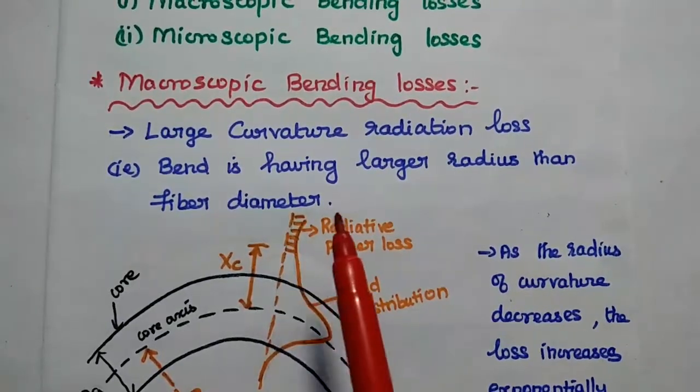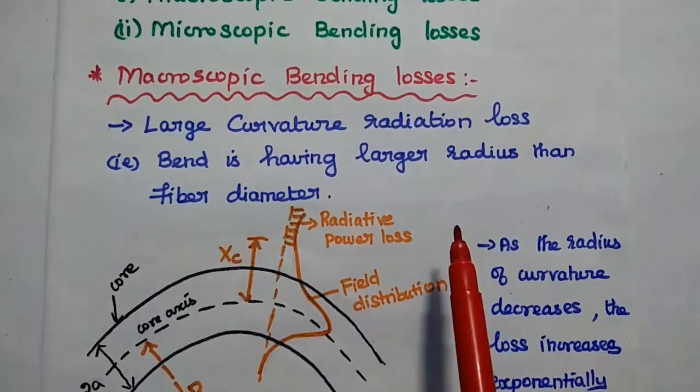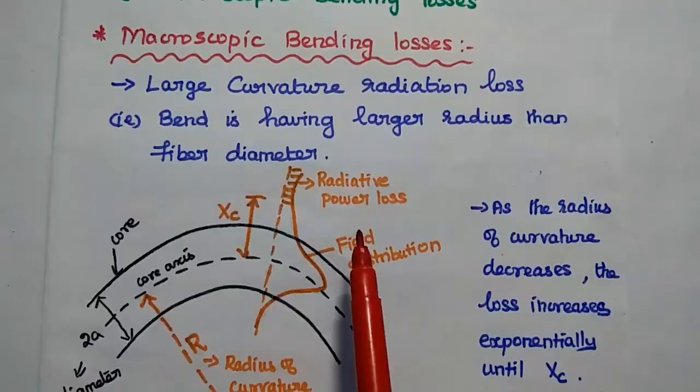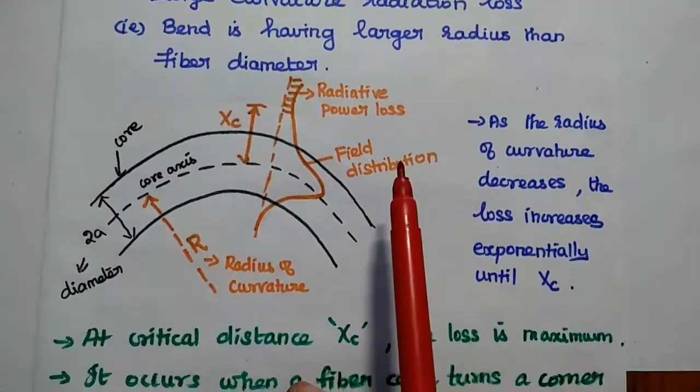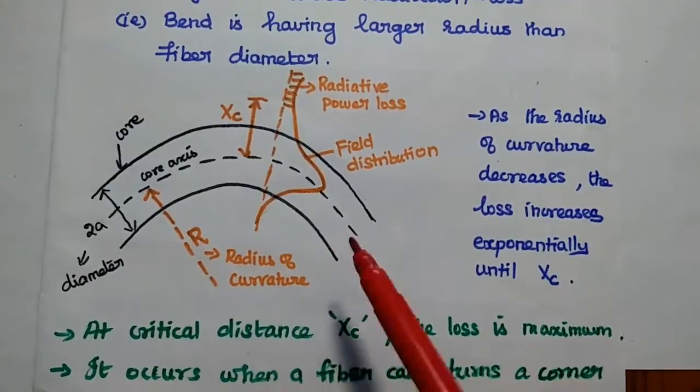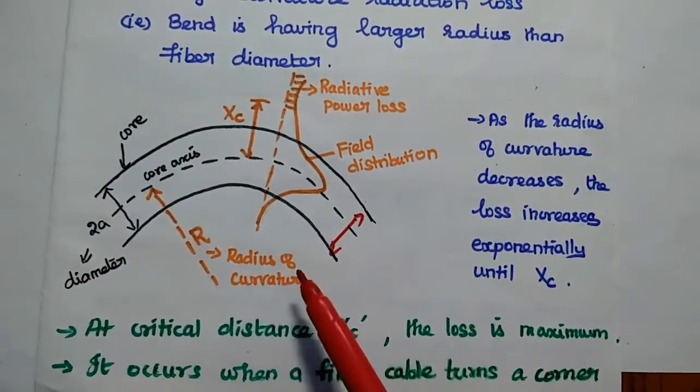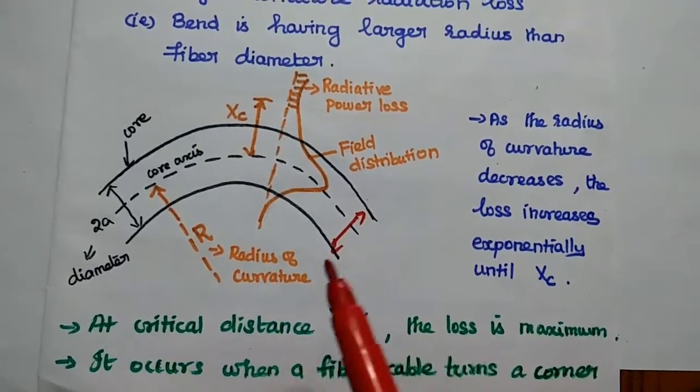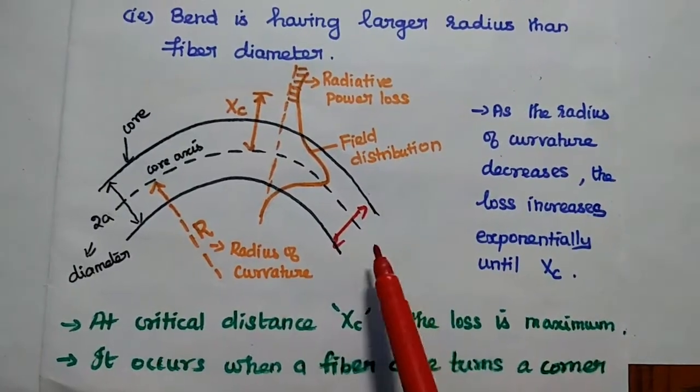This is also called as large curvature radiation loss. That is the bend is having the larger radius than the fiber diameter. So, here we can see this diagram. In this one, this is the fiber diameter. Here the radius of curvature is larger than this diameter. That is why it is called as larger curvature radiative loss.